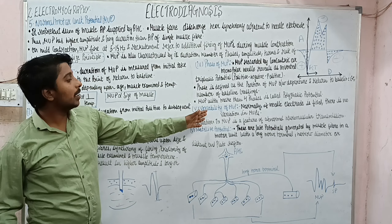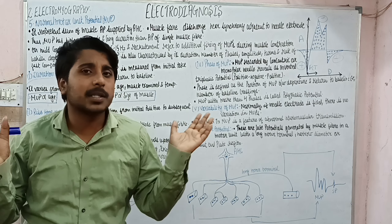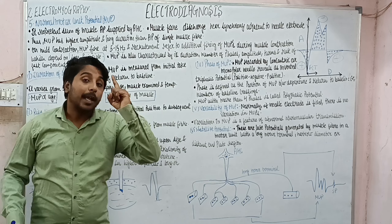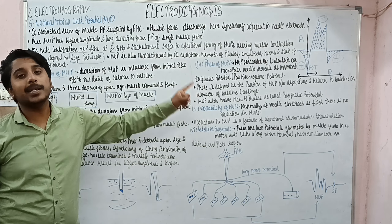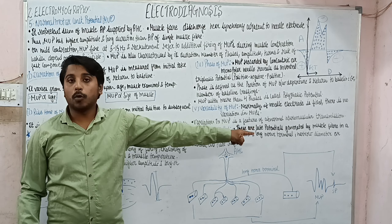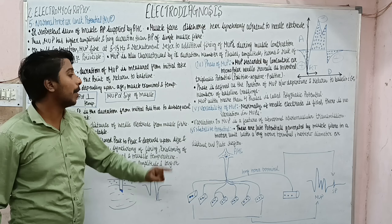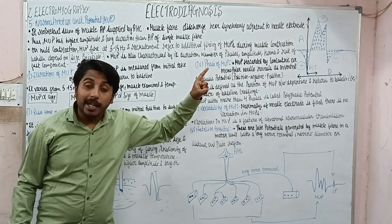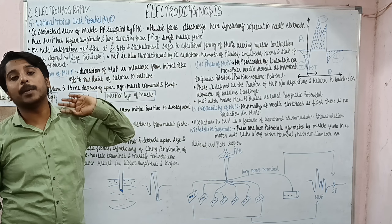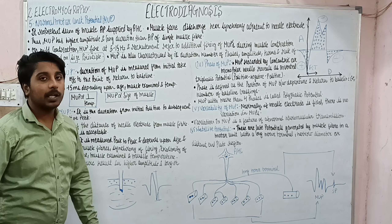Next is variability of motor unit potential. Normally, if the needle electrode is fixed and not moving, there is no variation in MUP. If variations are occurring with a fixed needle, it means there is something abnormal. So normally with a fixed needle electrode, there is no variation in MUP, but if variation occurs, it indicates an abnormality.